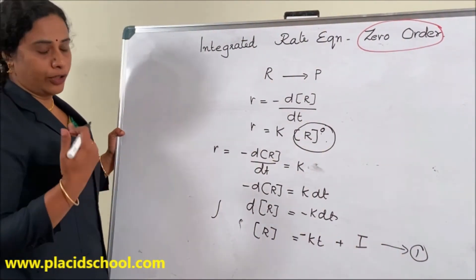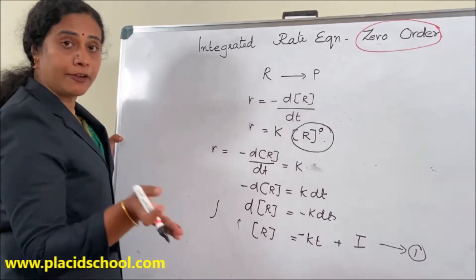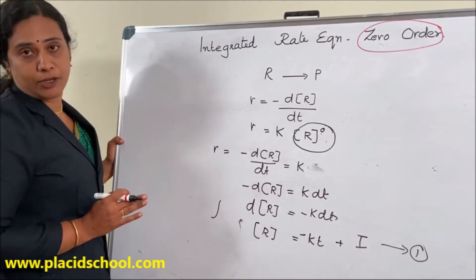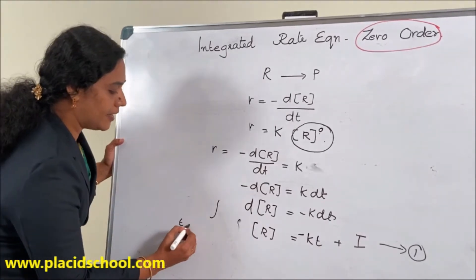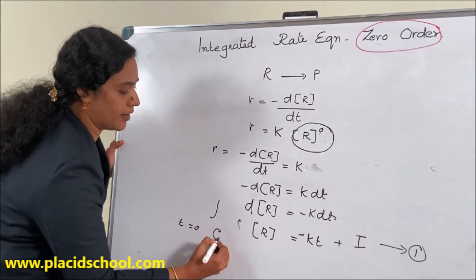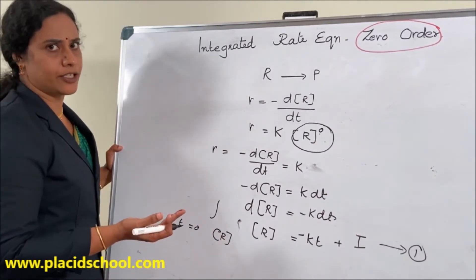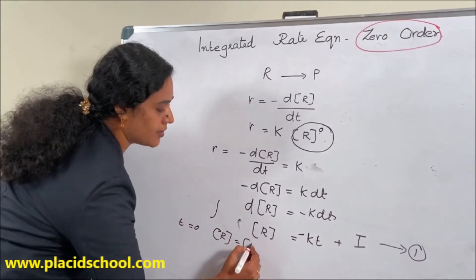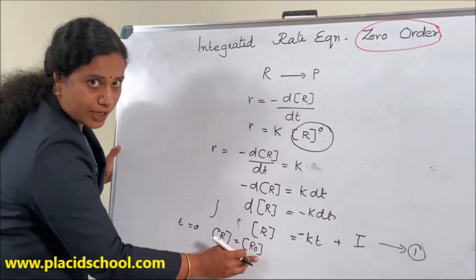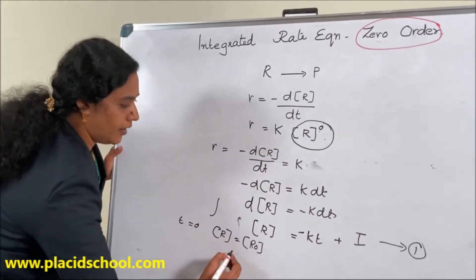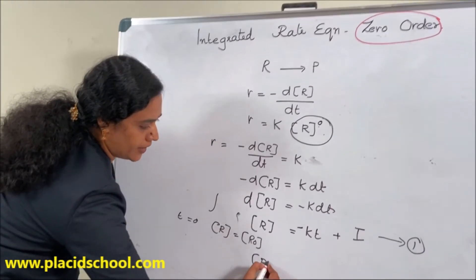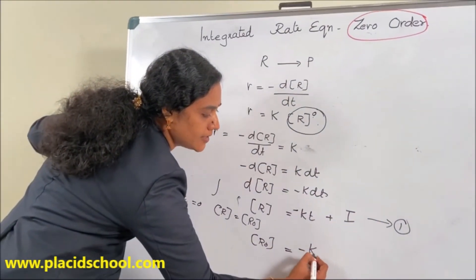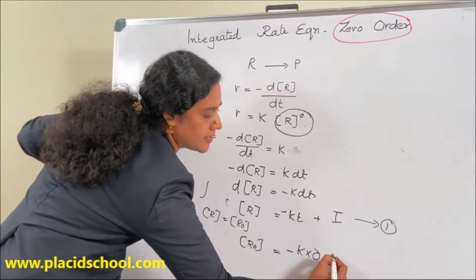Now we identify the value of i by considering initial conditions. At time t equal to zero, the concentration R becomes the initial concentration R₀. Substituting into equation 1: R₀ equals minus K into zero plus i, so the term minus K times zero equals zero.